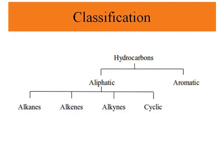We can classify hydrocarbons in terms of aliphatic and aromatic hydrocarbons. Aliphatic hydrocarbons are further categorized as alkanes, alkenes, alkynes, and cyclic compounds. Alkanes are called saturated hydrocarbons, while the other three are called unsaturated hydrocarbons.